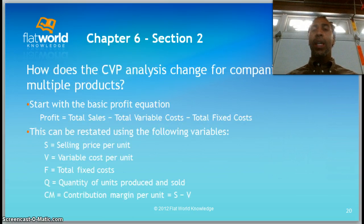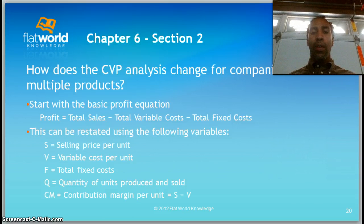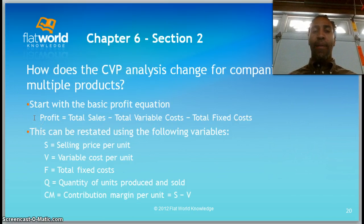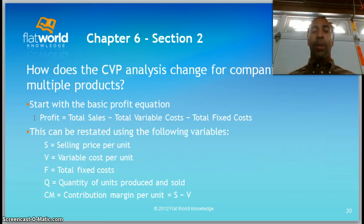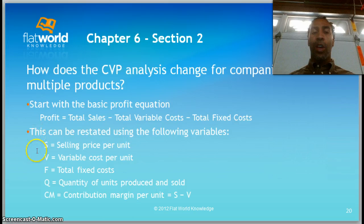So how does the CVP analysis change for companies with multiple products? You start with the basic profit equation, which is: profit equals total sales minus total variable cost minus total fixed cost.